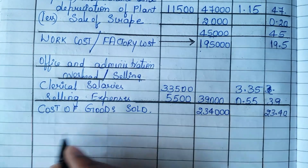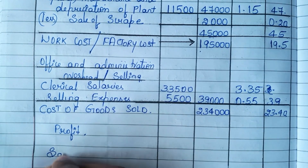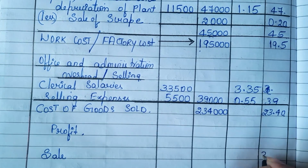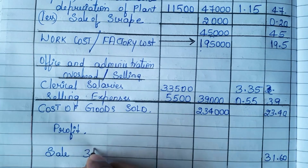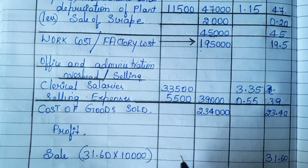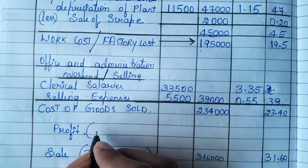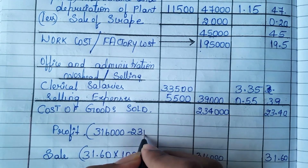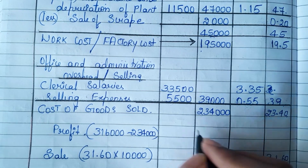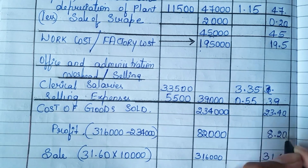Now for this, we need to show profit. We don't directly know the profit, but we can find out the sales. From the question, the net selling price was 31.60 per unit. So 31.60 into 10,000 units is 3,16,000. To get profit, subtract: 3,16,000 minus 2,34,000. You will get a profit of 82,000, which is 8.20 rupees per unit.